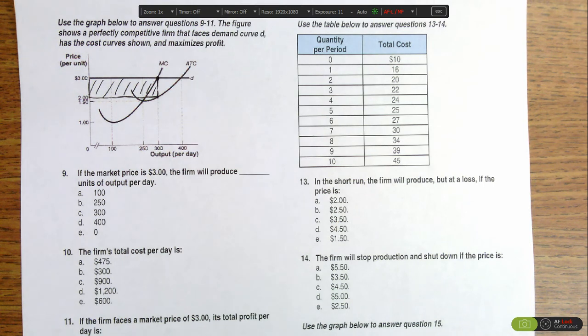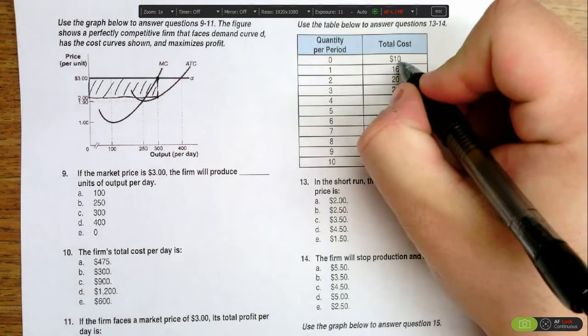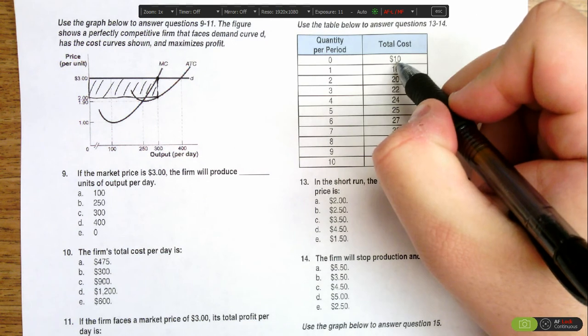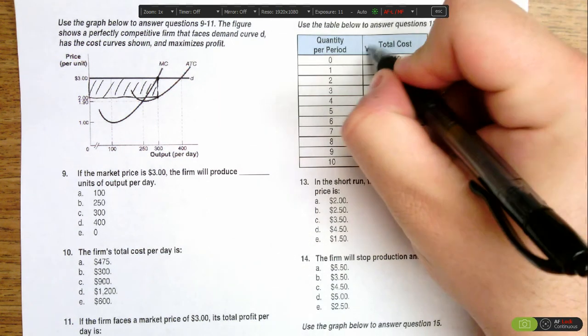The first thing we need to do is figure out our average variable cost curves to find our shutdown price. We know that fixed costs are $10 because when we're producing zero, we still have $10 in costs. So if we're trying to figure out variable costs...